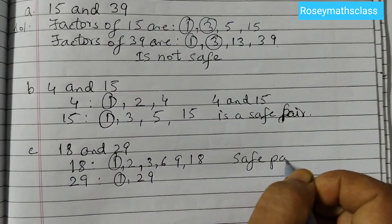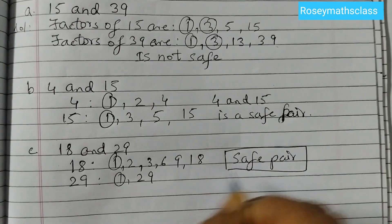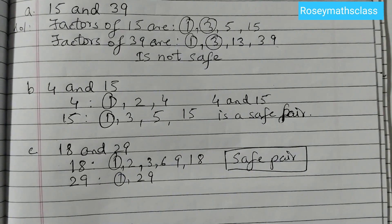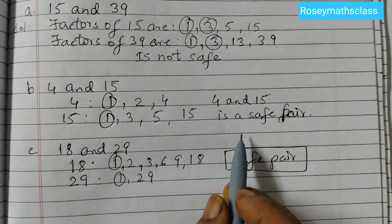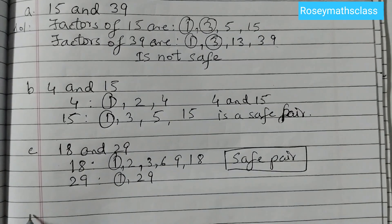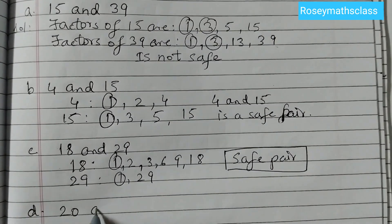It's a safe pair, or we can say these are co-prime numbers. 4 and 15 are also co-prime numbers. Now D, the last one.